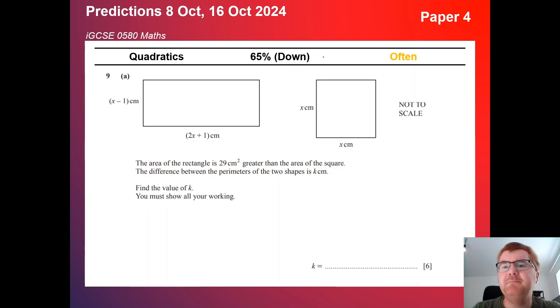On to quadratics, slightly down here in the often category. However, quadratics is a sneaky kind of topic, because it can appear in topics that you don't really expect. So often you'll get the x squared minus x minus 6 equals to 0. Use the quadratic formula to solve. That's kind of your classic quadratic question. But what can happen here is that you get something like this, where you have area of two shapes, and you have some information between the area of the two shapes, and then you generate a quadratic out of it. So even though it says here 65% down, in reality, it can kind of sneak its way into different topics. And when you get to A level and IB, that becomes even more important as well.